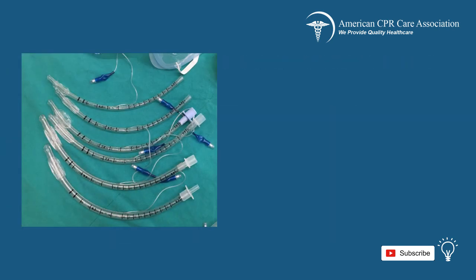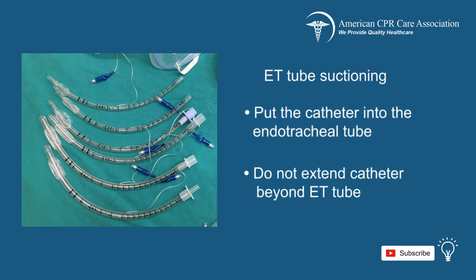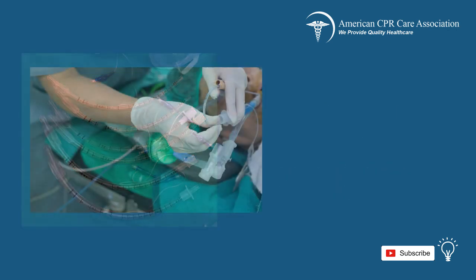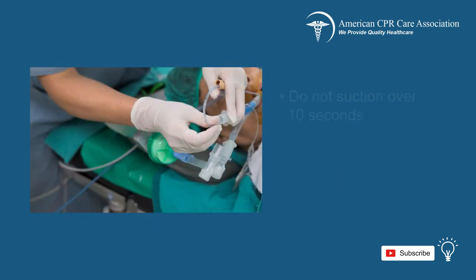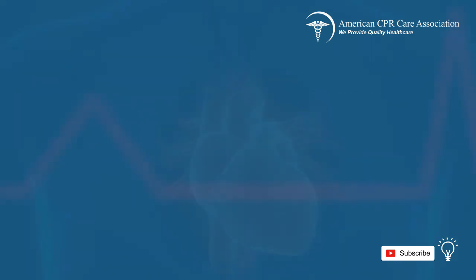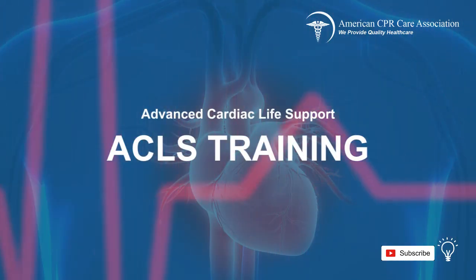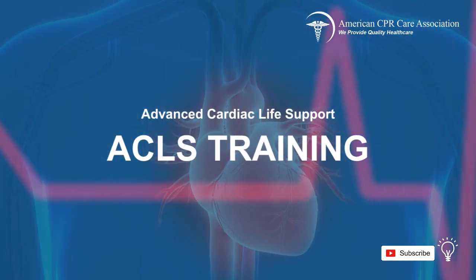When performing endotracheal or ET tube suctioning, put the catheter into the ET tube and make sure not to extend beyond the ET tube. Each suction should be no more than 10 seconds, keeping in mind that the patient will not receive oxygen during the suction. This was the chapter on airway techniques. Please proceed to the next section of this course to learn more.